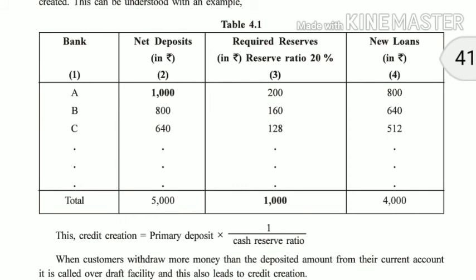The next function is inter-banking transactions — how transactions happen between one bank and another. Banks provide short term and long term credit to one another from time to time. Short term credit provided by one bank to another through the central bank is called call money. For example, if SBI helps Bank of Baroda, that is called call money, and it is for a shorter period of time. The interest rate on call money is called the call money rate.